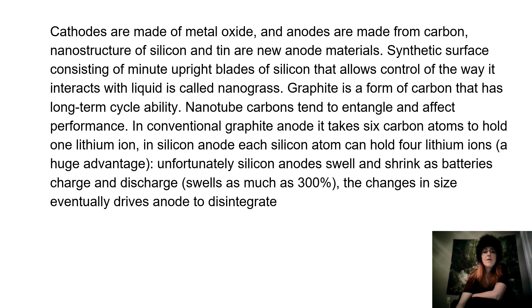Cathode and anode materials. Cathodes are made of metal oxide and anodes are made from carbon. Nanostructures of silicon and tin are new anode materials. Synthetic surface consisting of minute upright blades of silicon that allows control of the way it interacts with liquid is called nanograss. Graphite is a form of carbon that has long-term cycle ability. Nanotube carbons tend to entangle and affect performance. In conventional graphite anodes, it takes 6 carbon atoms to hold 1 lithium ion, whereas in silicon anodes, each silicon atom can hold 4 lithium ions — a huge advantage.